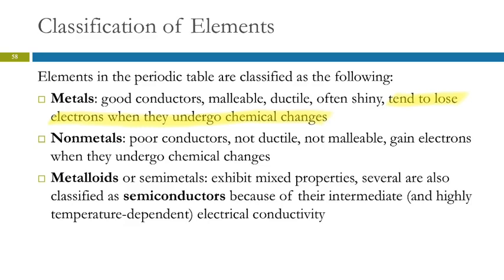The nonmetals are kind of opposite. They're not good conductors. They're not ductile. They're not malleable. And they gain electrons. So they're just kind of opposite of each other. And then the metalloids are semi-metals, also called semi-conductors. They're kind of in the middle. They conduct a little bit, but not as well as the metals do. Any questions?